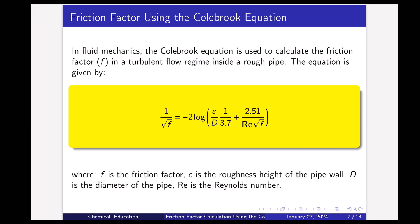The equation is given by 1 over √f = −2 log(ε/d × 1/3.7 + 2.51/(Re√f)), where f is the friction factor, ε is the roughness height of the pipe wall, d is the diameter of the pipe, and Re is the Reynolds number.